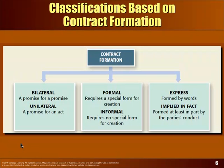Bilateral means two promises — a promise for a promise. So you go out and buy a car: you promise to buy it, they promise to sell it. The moment the promises are exchanged, there's a contract. If you fail to pay or they fail to deliver, that's a breach. Any provision they promise to perform and fail to perform is also a breach.